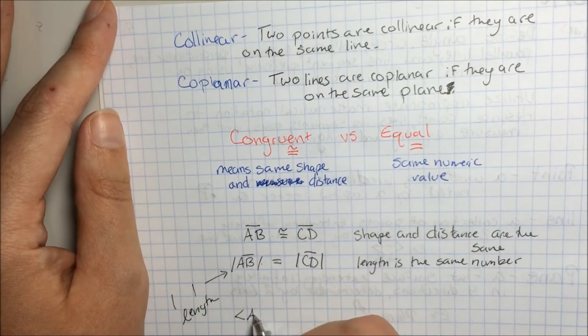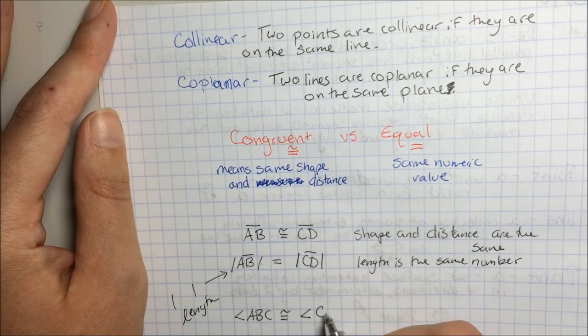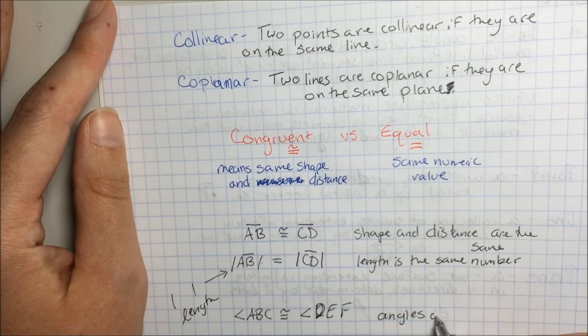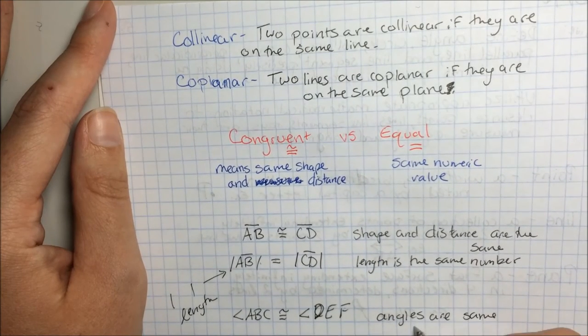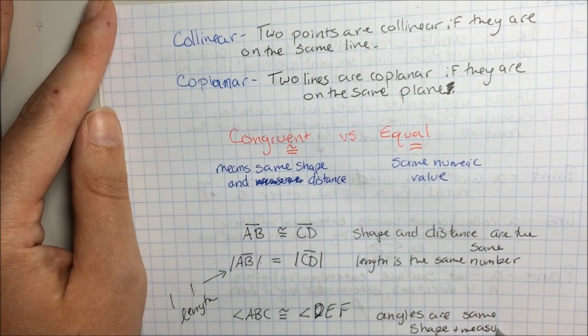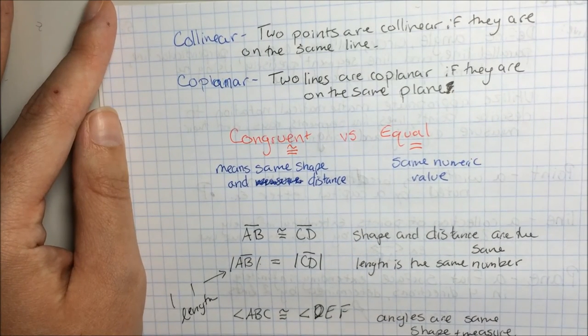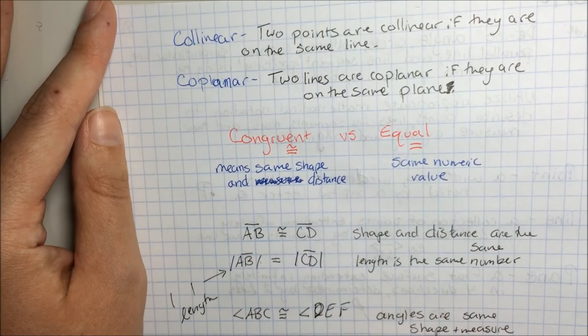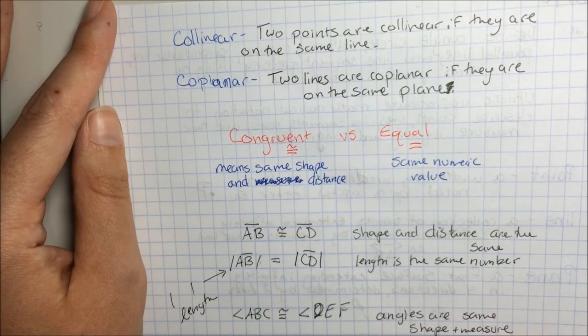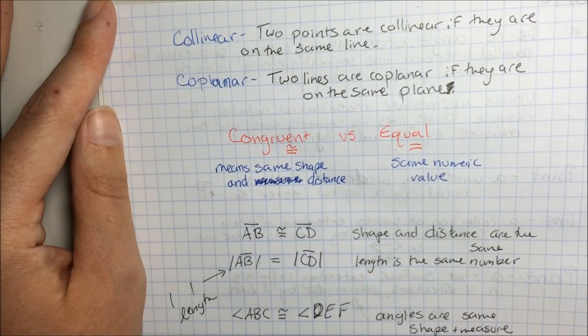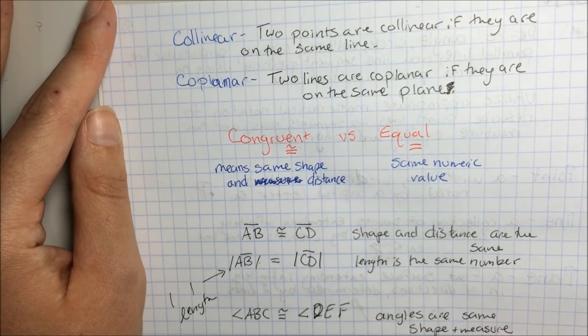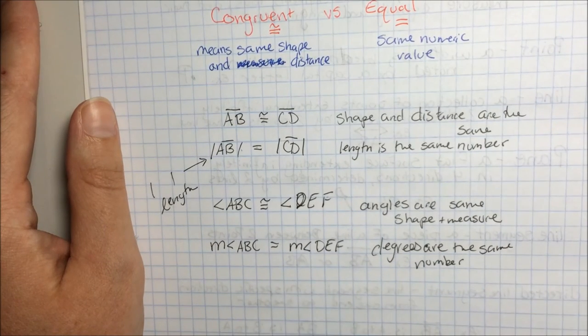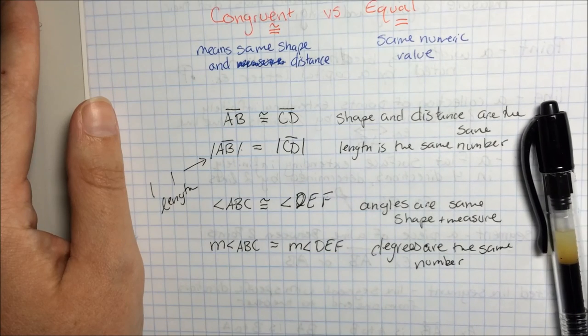Angle ABC is congruent to angle DEF means the angles are same shape and measure. Whereas if I were to use an equal, I'd say the measure of angle ABC is equal to the measure of DEF, and this would mean the degrees are the same number. So we use congruent whenever we're talking about a shape, and equal whenever we're talking about a number. That's it.